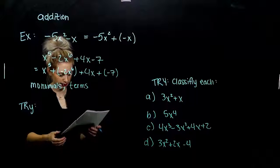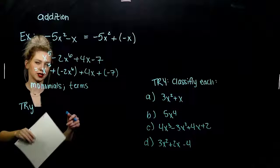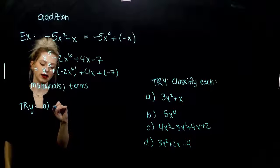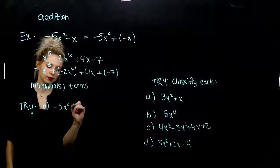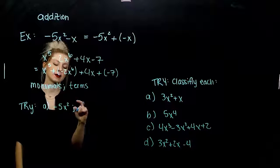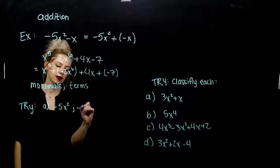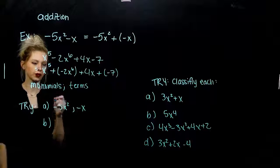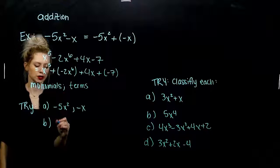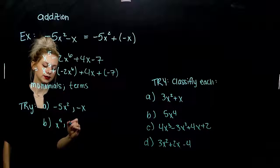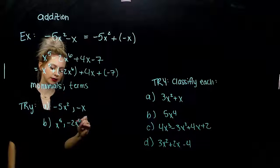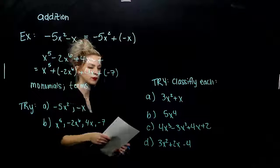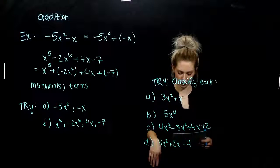Take those two and identify the terms. We've already taken care of the first. For the second one: negative 5x squared was our first term and negative x was the second term. In our second example, the first term was x to the fifth, second was negative 2x to the sixth, positive 4x, negative 7. The sign just goes with the thing on the right.